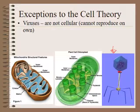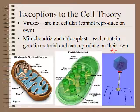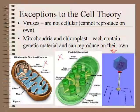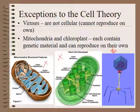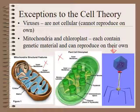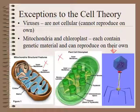Another weird exception to cell theory are mitochondria and chloroplasts. They're unusual because each actually has its own DNA and they reproduce on their own. This has led many scientists to suspect they were originally independent organisms that were ingested by larger cells — a theory called endosymbiotic theory. The idea that these organelles can reproduce on their own, but are not technically cells, makes them stand out in relation to cell theory.